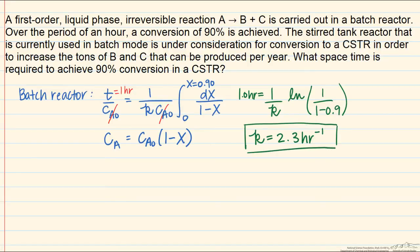Now, we're going to try to use the value of the rate constant in order to solve for the space time that's needed to get 90% conversion in a CSTR. We'll again follow the same three steps, so first is the material balance for a CSTR.